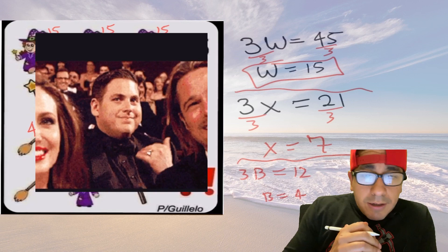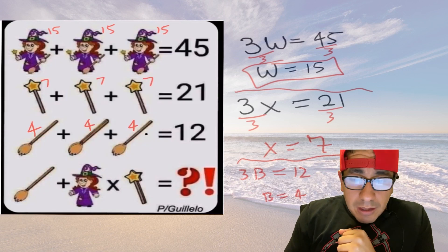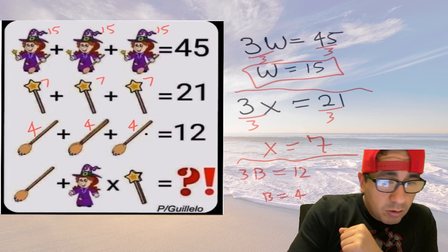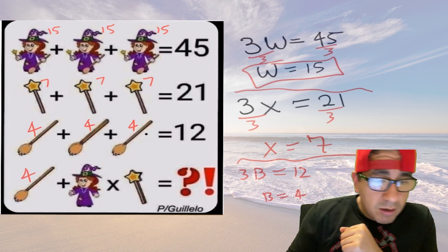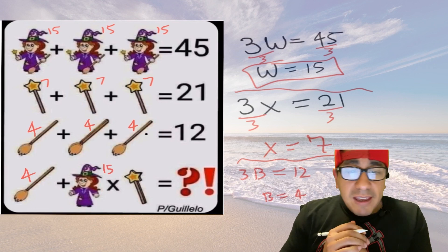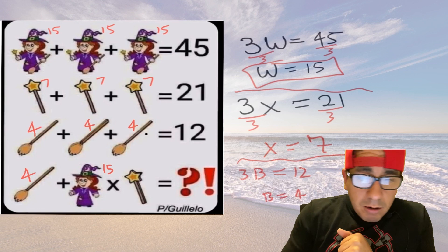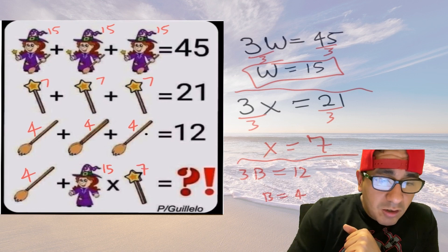So now let's plug all this in. So the brooms we said is worth four, the witches be 15, and then our wands that we called X are worth seven.